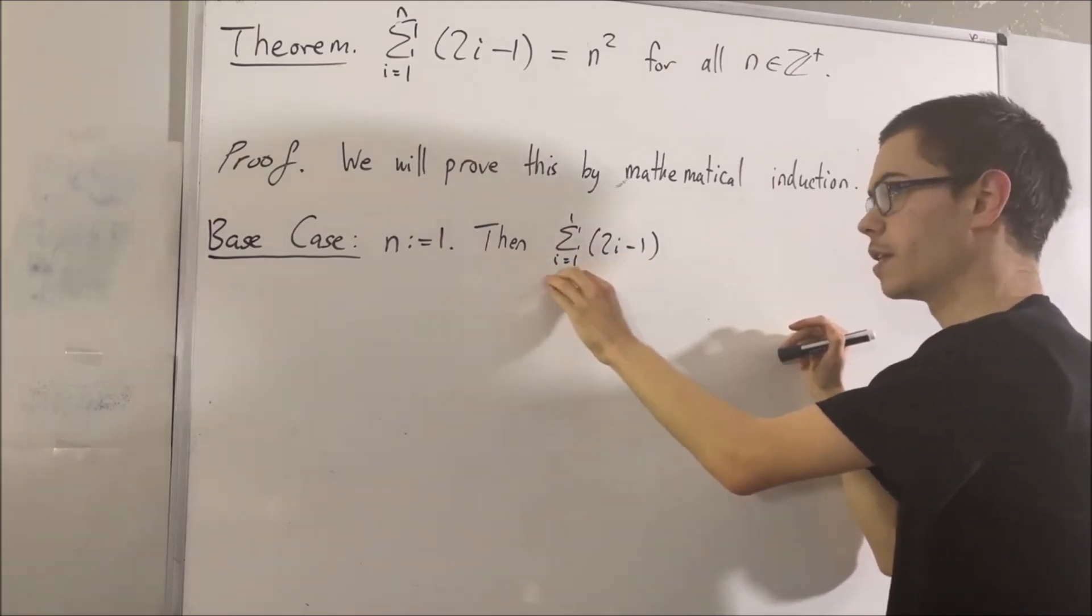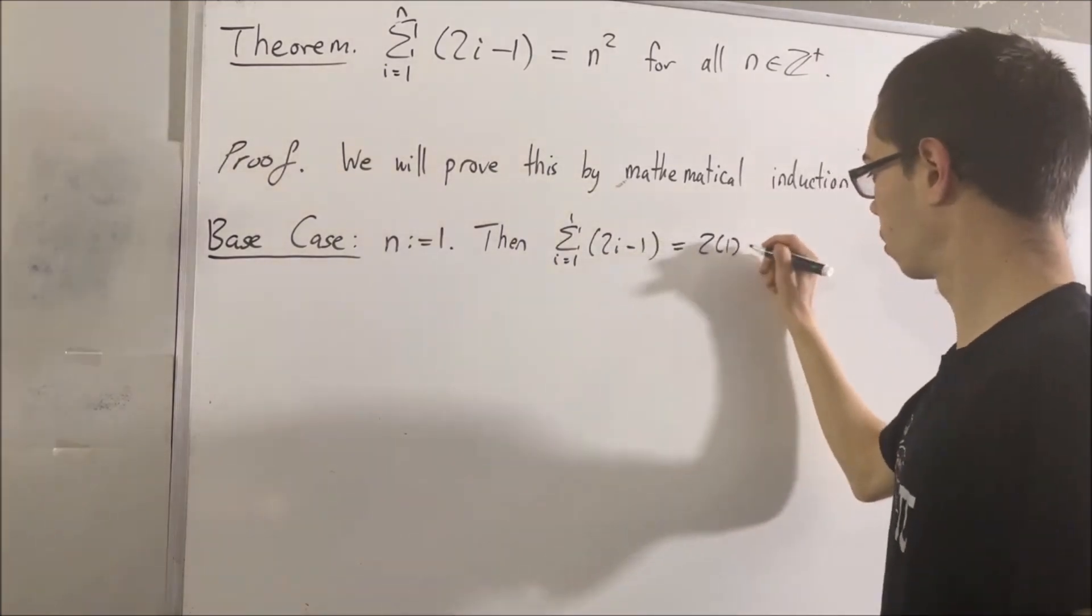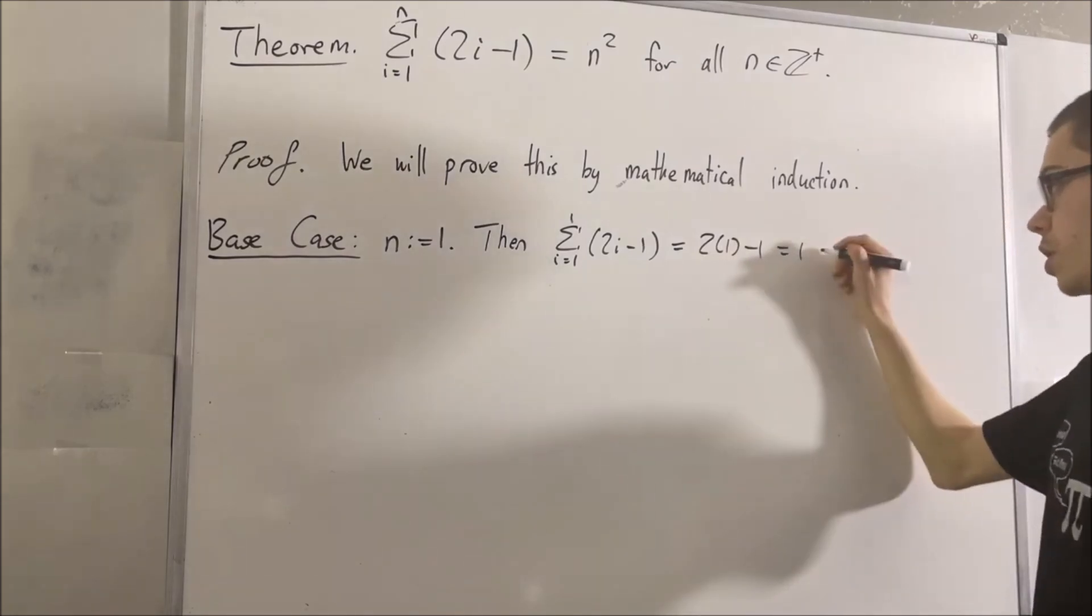So really, this sum is equal to 2 times 1 minus 1. And that's it. And this is equal to 1, which is equal to 1 squared.